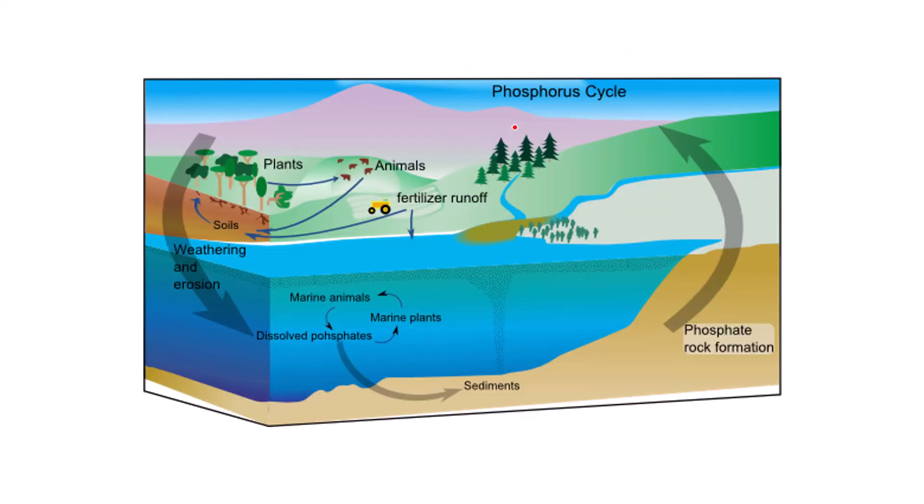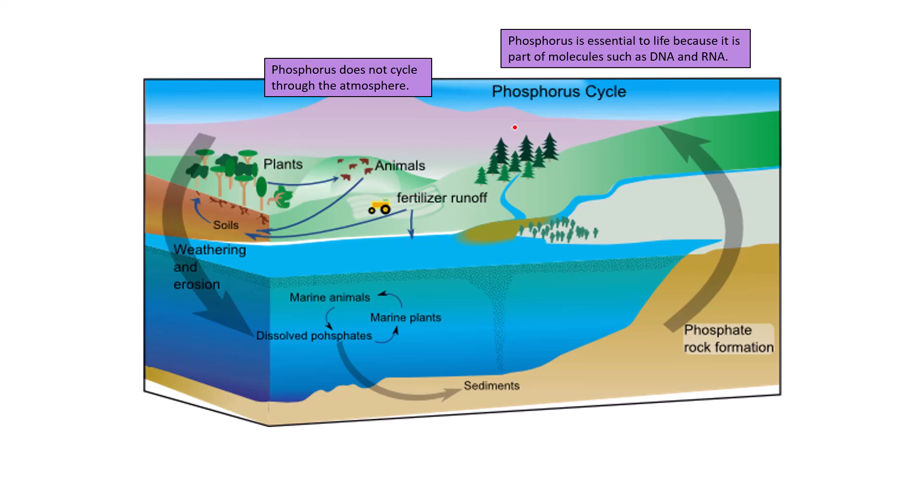The last cycle we're going to talk about is the phosphorus cycle. Phosphorus is essential to life because it is part of molecules such as DNA and RNA just like nitrogen. Phosphorus is equally as important in the production of DNA and RNA which is fundamental to life because that's how our genetic material is stored. Phosphorus does not cycle through the atmosphere. That's an important note. The carbon cycle cycles through the atmosphere. The water cycle cycles through the atmosphere. The nitrogen cycle cycles through the atmosphere. Phosphorus does not. There is no phosphorus gas. So the phosphorus cycle has to be maintained through different environmental conditions and different life forms.